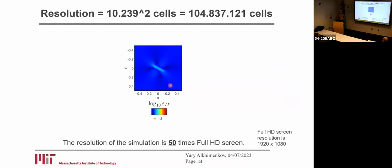Here is an example of quite high-resolution simulation of 10,000 by 10,000 — corresponding to more than 100 million grid cells. If you use finite element methods with an implicit solver, you are restricted to several million elements — like 1 million, 5 million, or a maximum of 20 million.